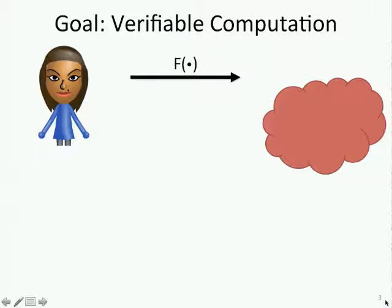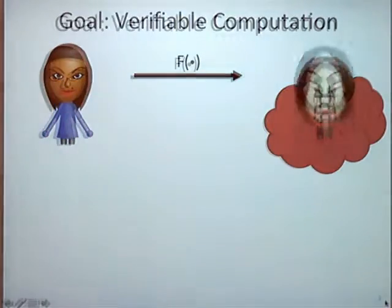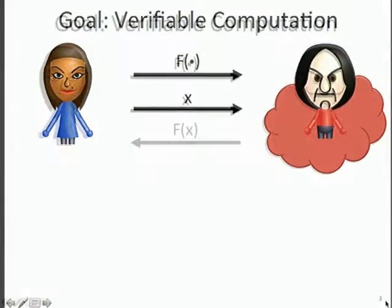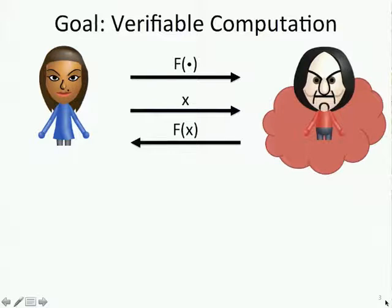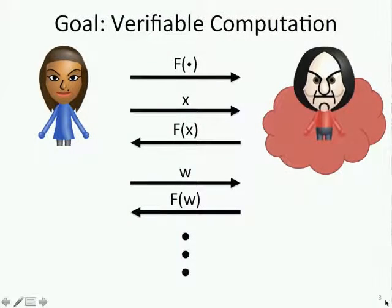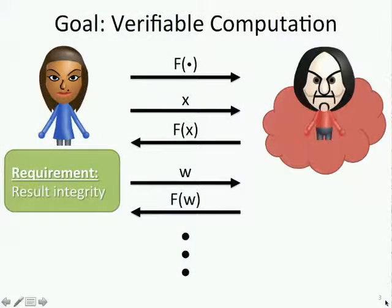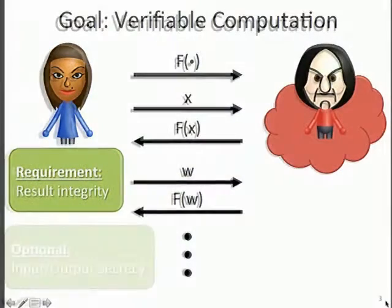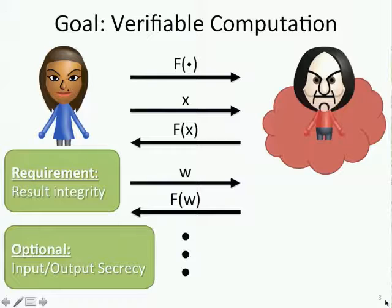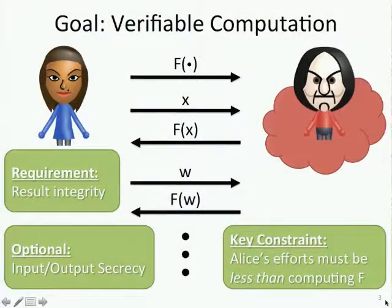To be more precise about the goal: we'd like Alice to be able to specify some function to an untrusted third party, supply an input, and get back the result, then adaptively choose new inputs and get back additional outputs—hopefully polynomially many. The key requirement is integrity: the results coming back are correct. An additional requirement is secrecy—for inputs, outputs, or both. Some applications like SETI@home don't care about secrecy, but medical data or film rendering requires it. The key constraint is that you must do less work to prepare and verify than computing the function yourself.